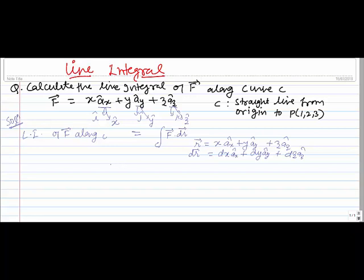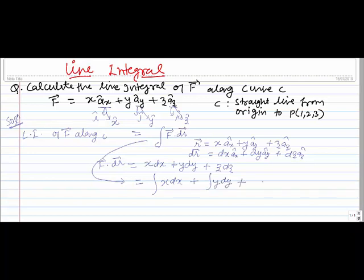Now we have to compute F·dr, the dot product of F vector and dr vector. Since ax·ax = 1 and ax·ay = ax·az = 0, we get x·dx from the first term. Similarly, y·ay dotted with the whole dr gives only the ay term, so we get y·dy, and likewise z·dz. So F·dr = x dx + y dy + z dz.